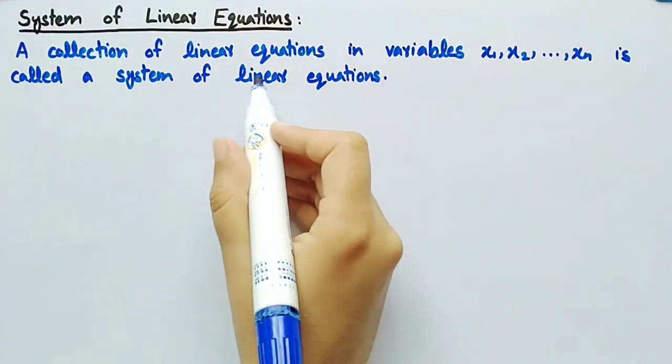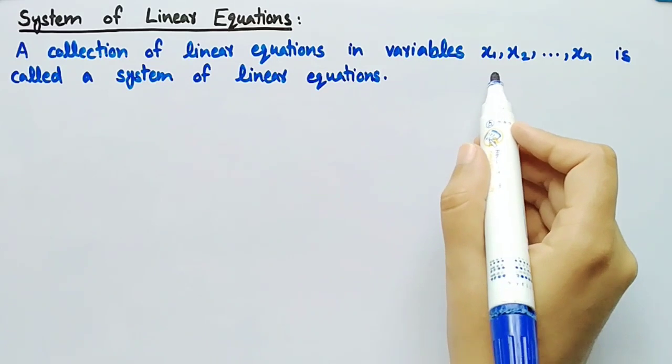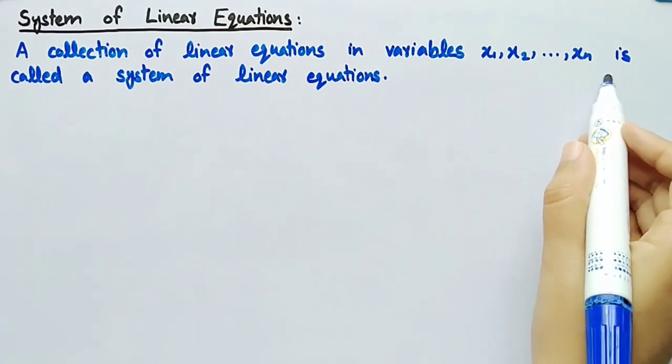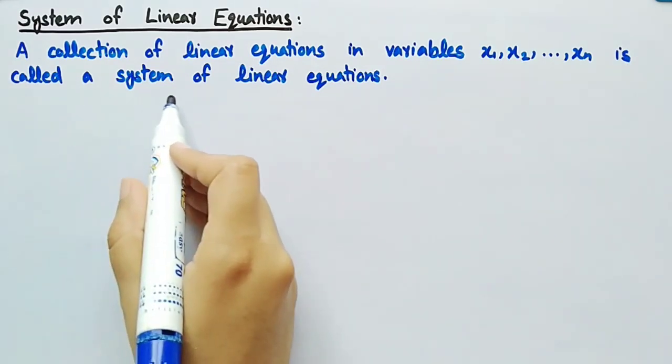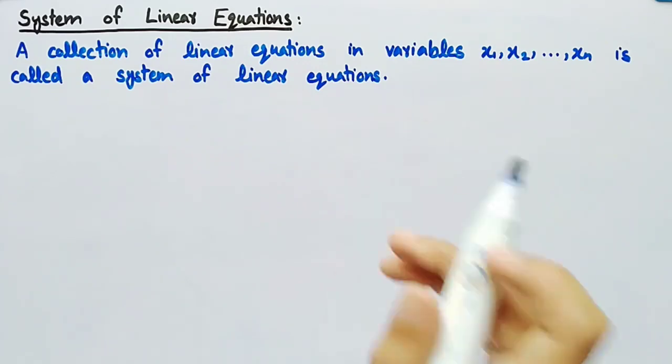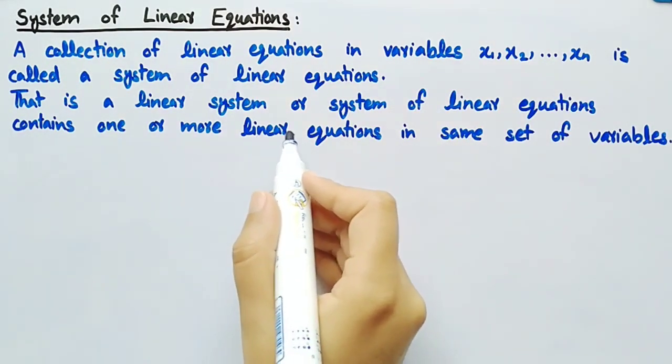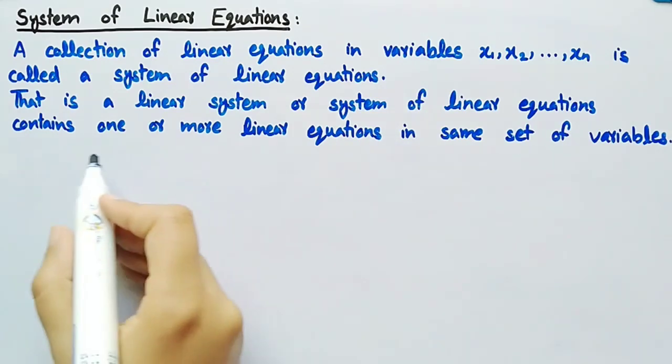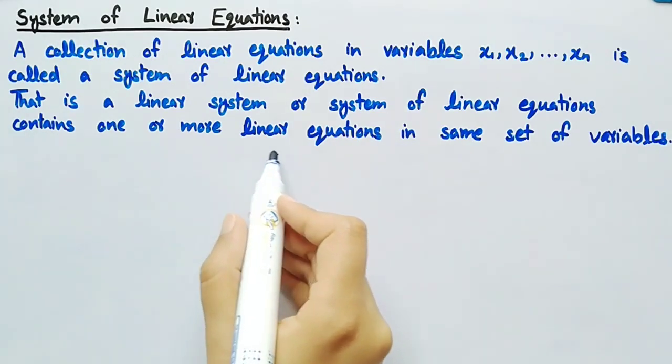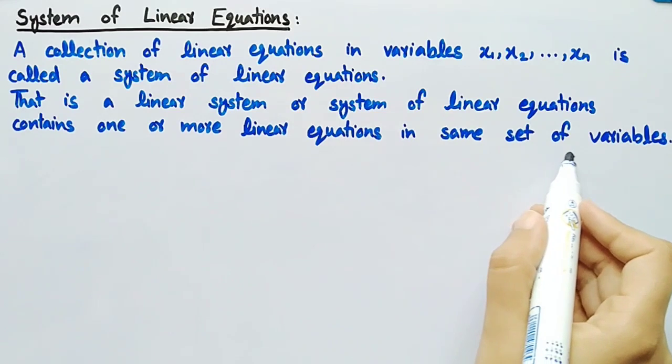A collection of linear equations in variables x1, x2, up to xn is called a system of linear equations. That is, a linear system or system of linear equations contains one or more linear equations in the same set of variables.